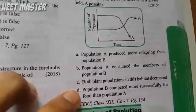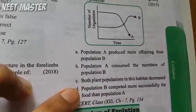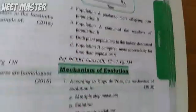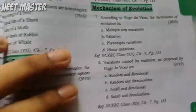Population B competed more successfully for food than population A. This is the mechanism of evolution — we have to study competitive fitness.